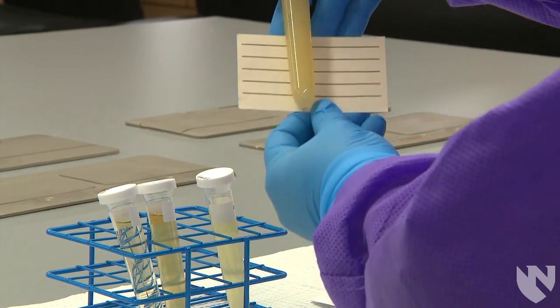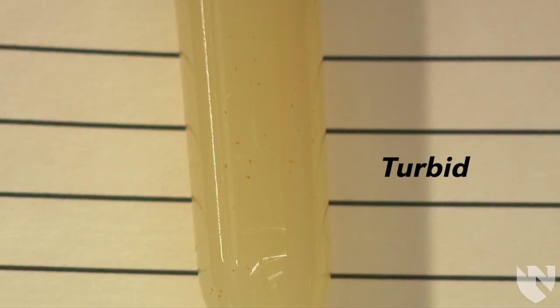Last, we have a turbid urine. When a urine is turbid, you cannot see the lines on the card at all. You will also see large dense particles or sediment falling out of solution. You may even notice thick viscous mucus in the urine.